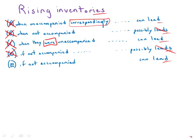Rising inventories, if not accompanied by a corresponding increase in sales, can lead to production cutbacks that would hamper economic growth. So E by far is the best answer.